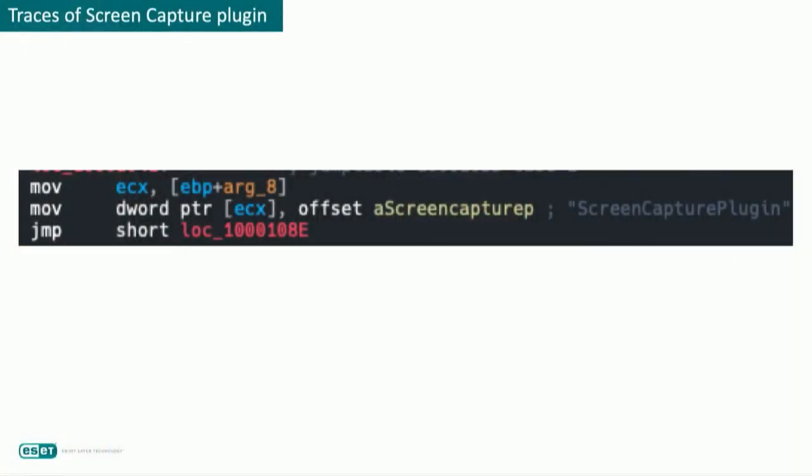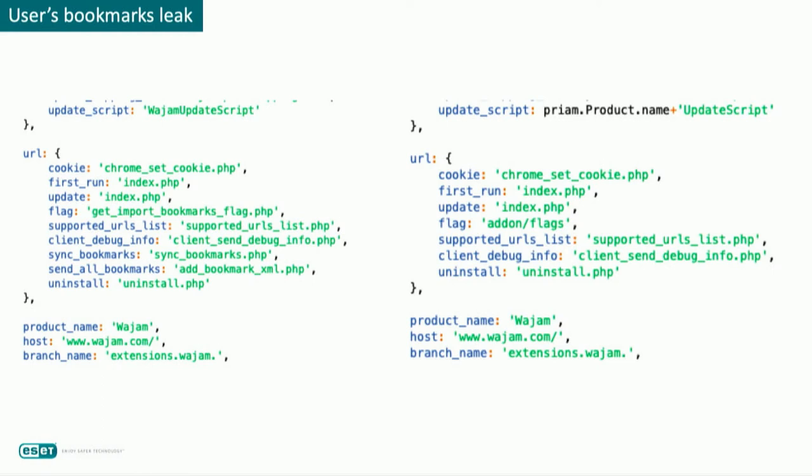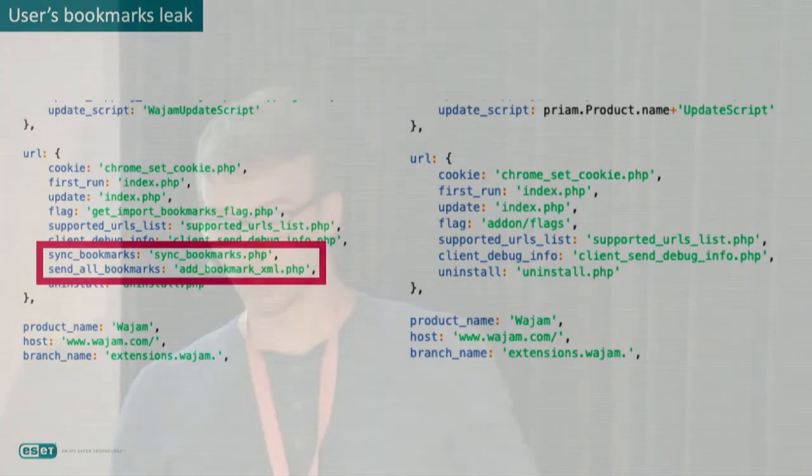The browser extension has not been distributed since 2014 — they basically removed the download link from their website. Here are some traces of the screen capture plugin in the code, which came as a DLL alongside the browser extension. In one of WAJAM's JavaScript files, you can compare the old version on the left, which leaked the user's bookmarks, with the latest version on the right, where that feature was removed.